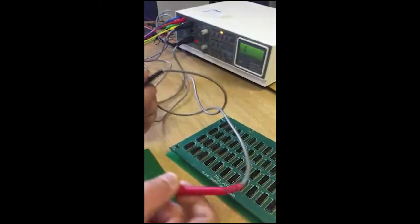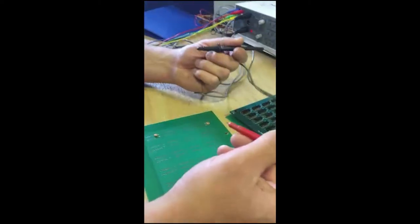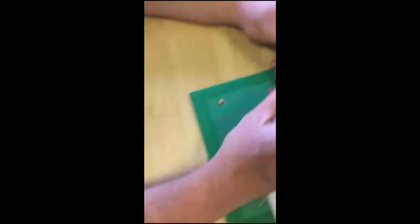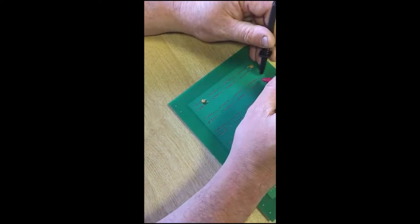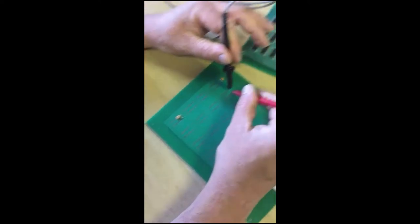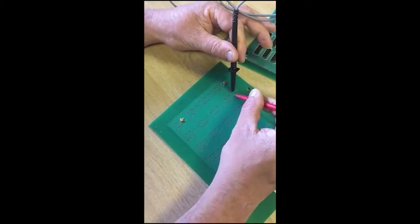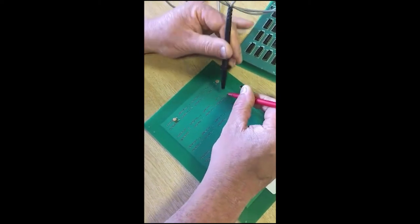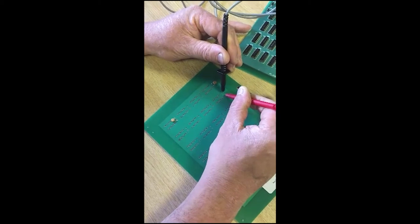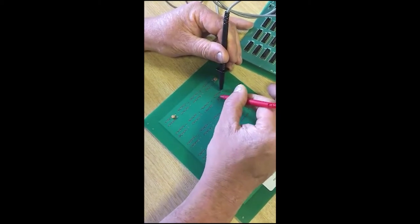So what you could do on the board, on your customer's board, in this case the demo board, you work out where you've got your short. So in this particular case, I've got a short between VCC here and ground here. Yeah? There's no short anywhere else.